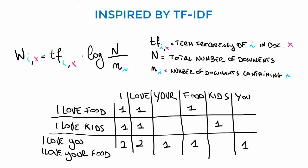Looking at the formula, we see that the term frequency of word i appearing in document x is multiplied by the logarithm of the total number of documents in the corpus divided by the number of documents in which the word i appears.